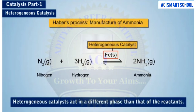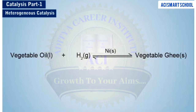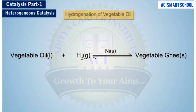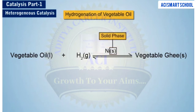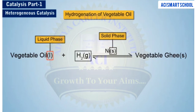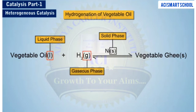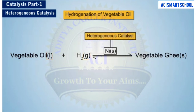Heterogeneous catalysts act in a different phase than that of the reactants. Most heterogeneous catalysts are solids that act on substrates in a liquid or gaseous reaction mixture. Consider the hydrogenation of vegetable oils in the presence of finely divided nickel as the catalyst. In this reaction, the catalyst nickel is in the solid phase and the reactant vegetable oil is in the liquid phase, while hydrogen is in the gaseous phase. Thus, nickel is a heterogeneous catalyst and this is an example of heterogeneous catalysis.